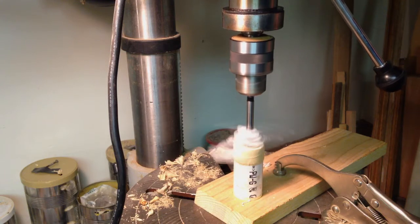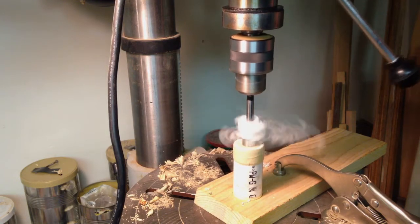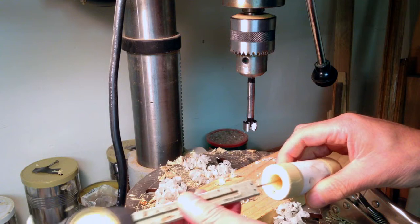Using various Forstner bits in the drill press, I augured out the 5/8 inch diameter hole which will fit on the light stand.